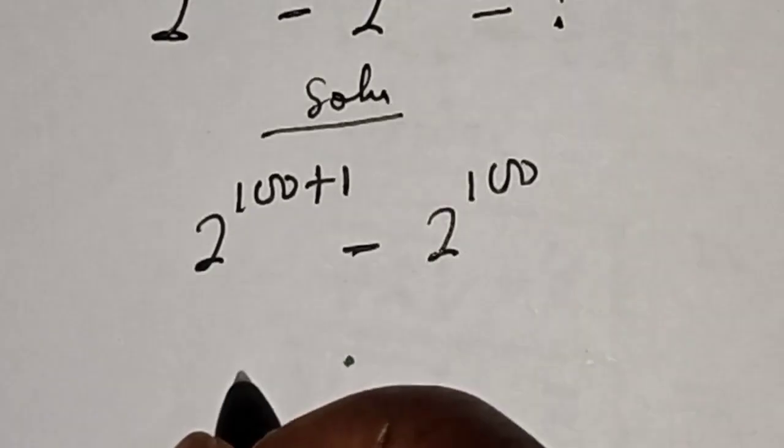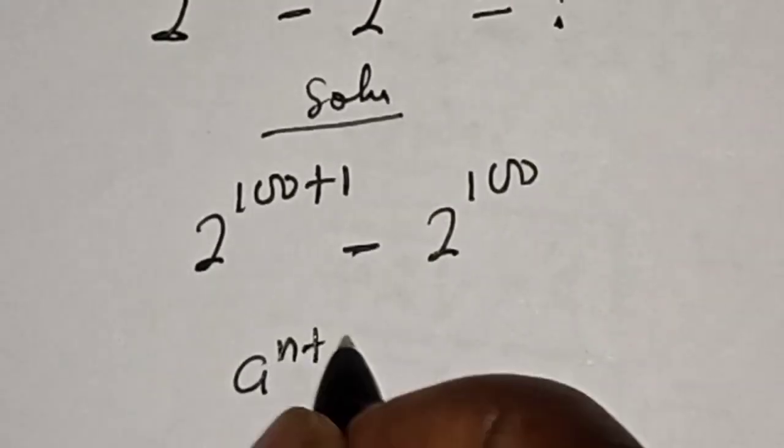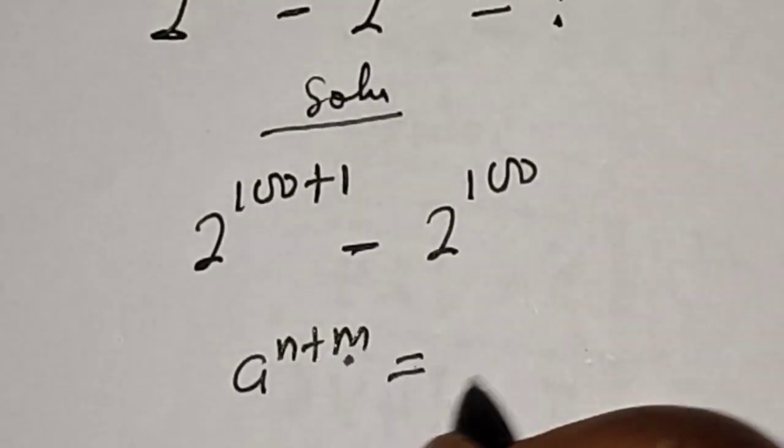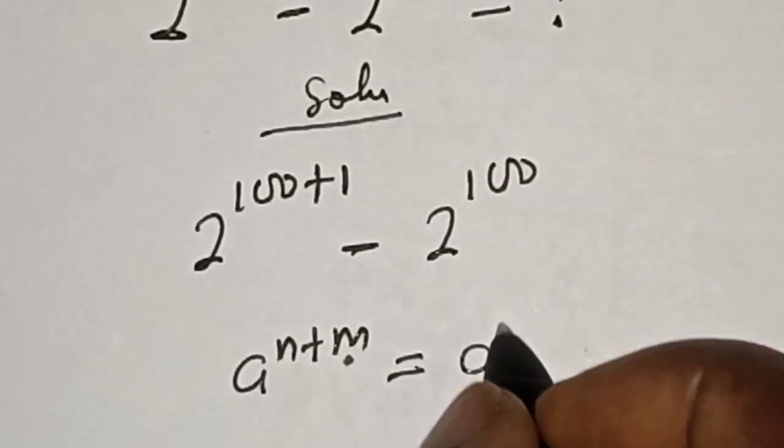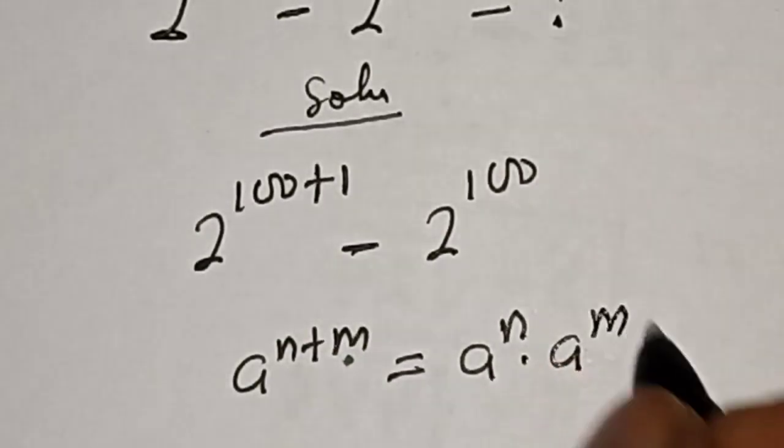Take note of this rule: if you have a raised to power n plus m, this equals a raised to power n multiplied by a raised to power m.